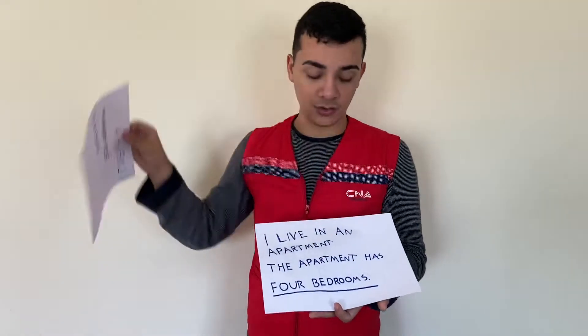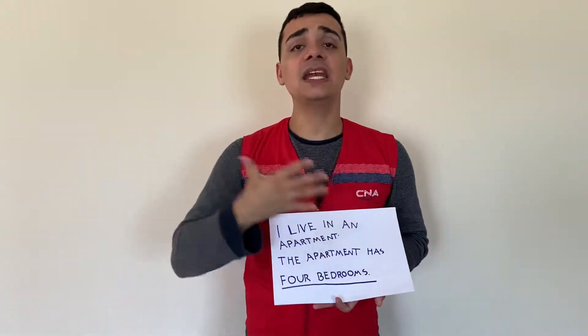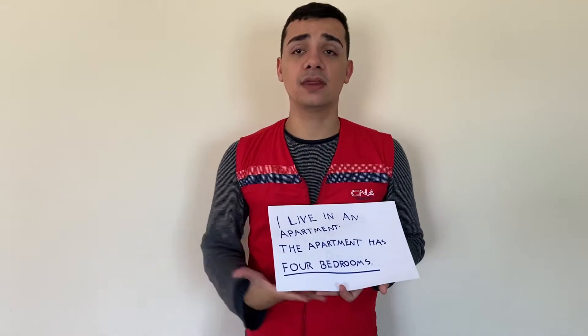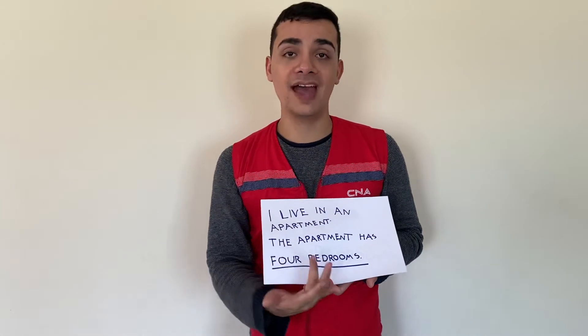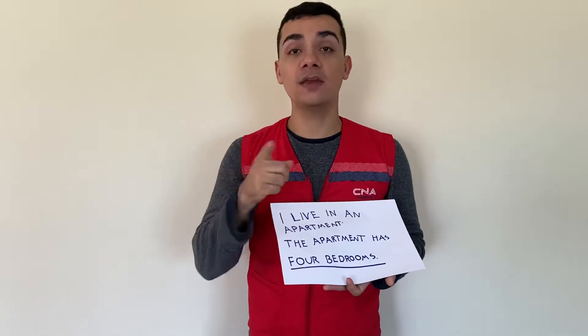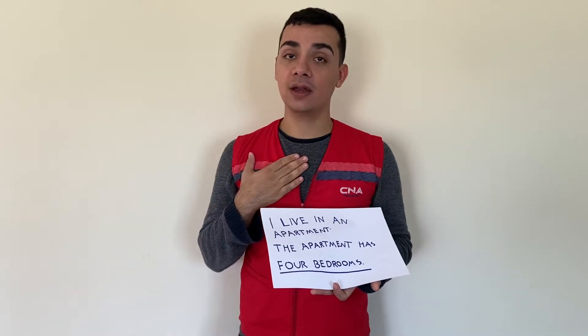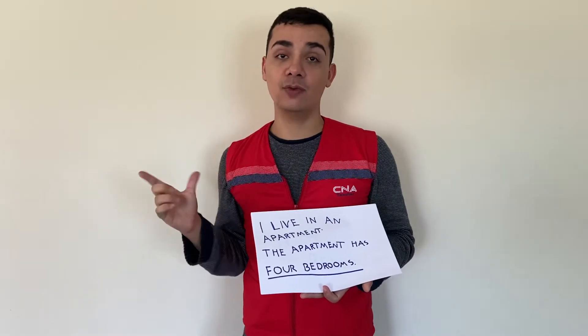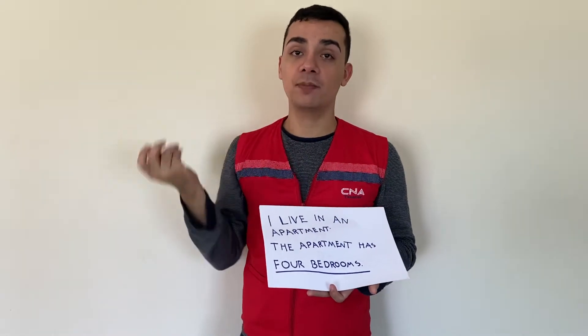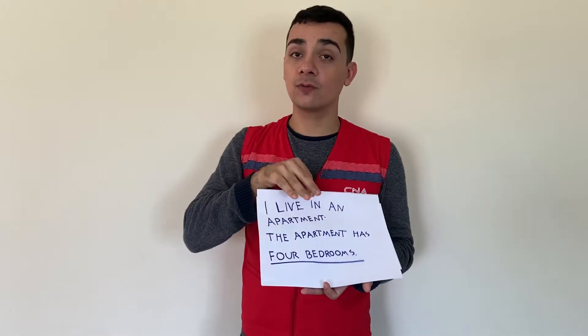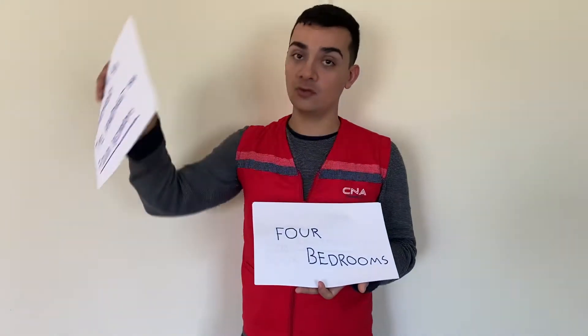But how do we make one sentence turn into the other one? Here's how. First thing you're gonna do is: what in this sentence is describing something? Four bedrooms. Why? Because if I tell you, 'I live in an apartment. It has four bedrooms,' you get an idea in your mind — you can paint a picture of an apartment with four bedrooms. So, four bedrooms is the description.